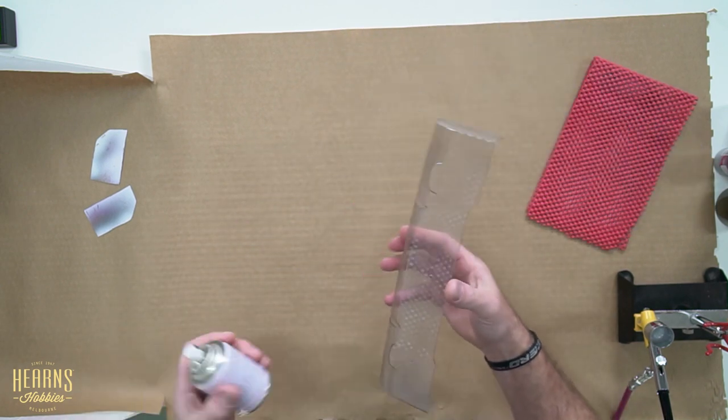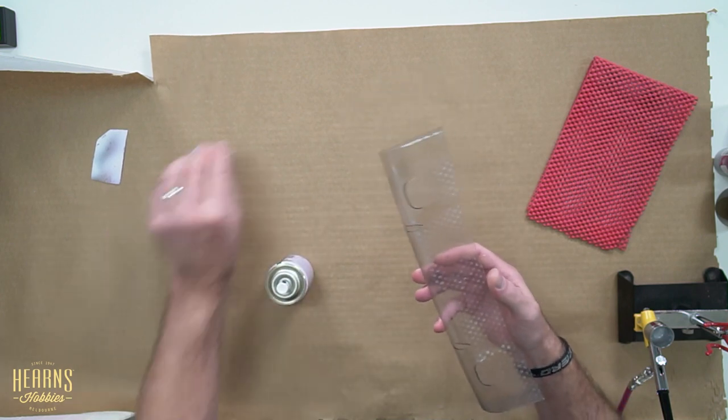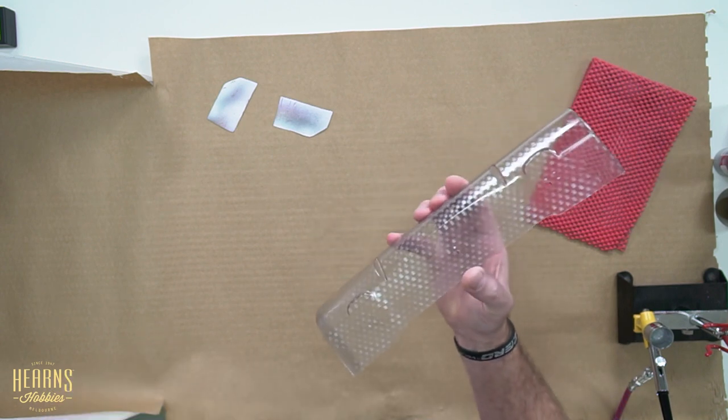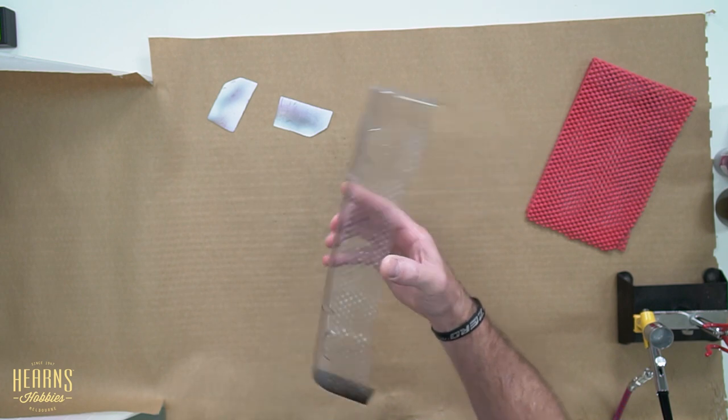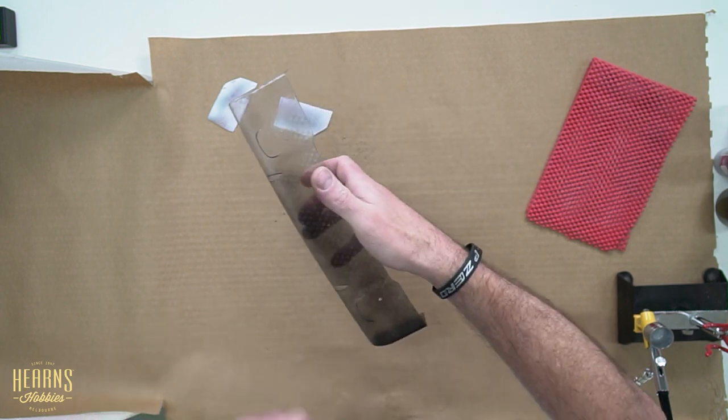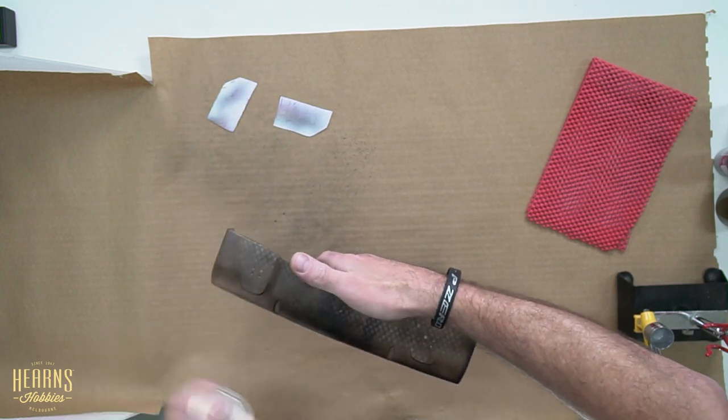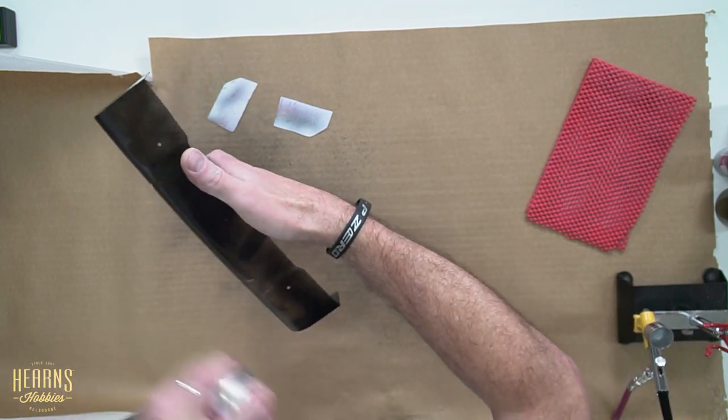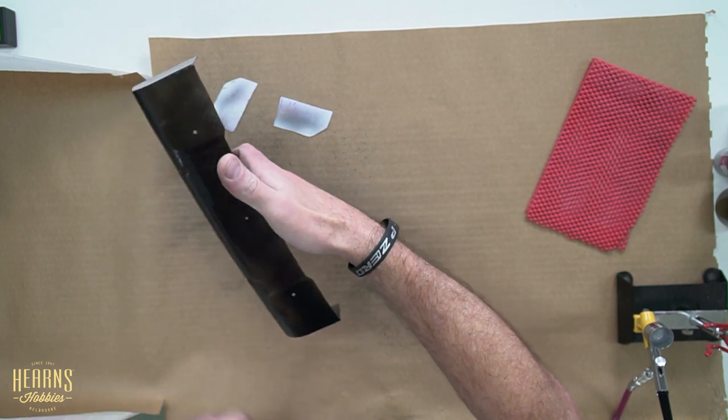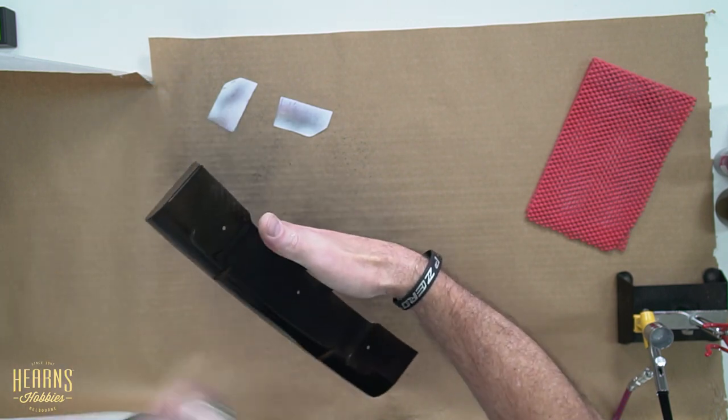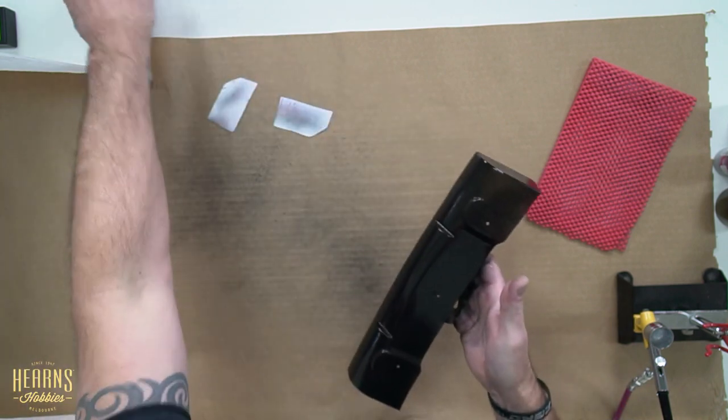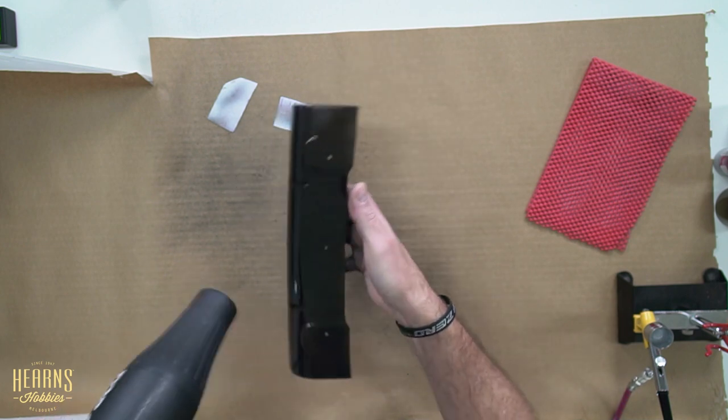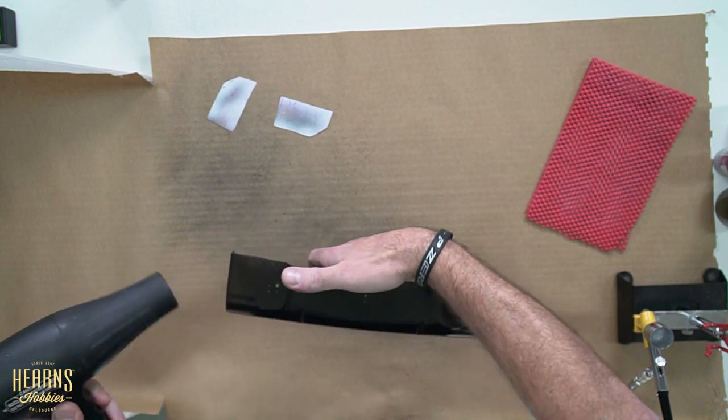And again, just do lots of light coats instead of one heavy coat. There's no need to hose this stuff on. Start from the end plate. And there we go. Going to hit that again with the heat gun. Nice light coat of black paint.